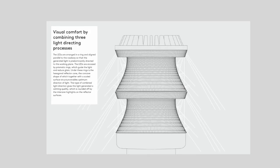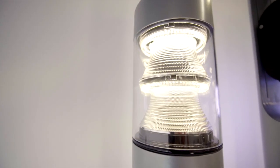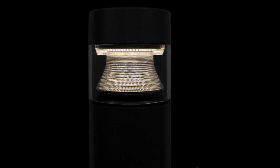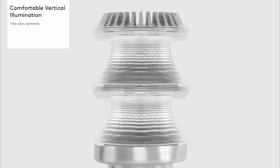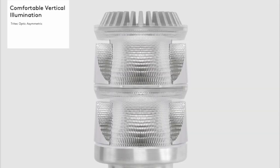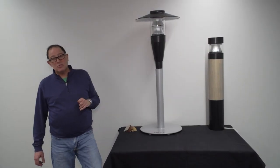The LEDs are encased by prismatic rings which guide the light and reduce glare. Under these rings is a hexagonal patterned reflector cone combined with a patterned surface structure that enables optimal distribution of light. This type of combined light ray redirection gives the light a very calming quality. By adding surface area with additional tri-tech stacks, we increase the lumen output without increasing the source glare or luminance.